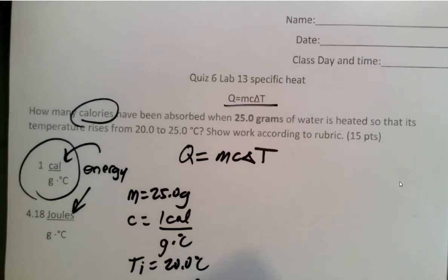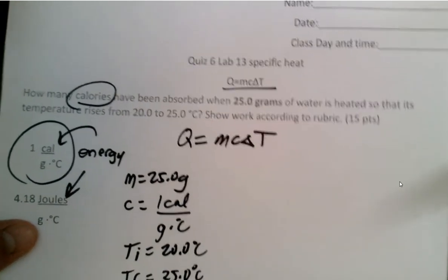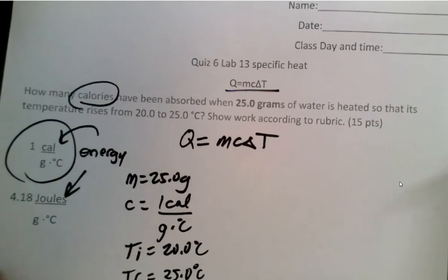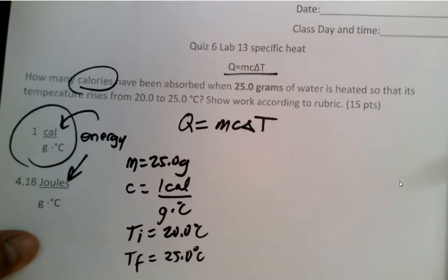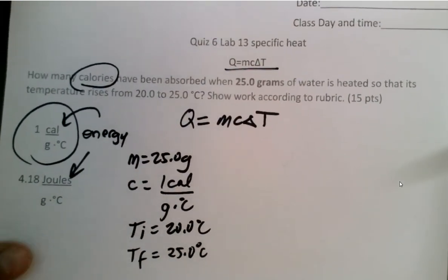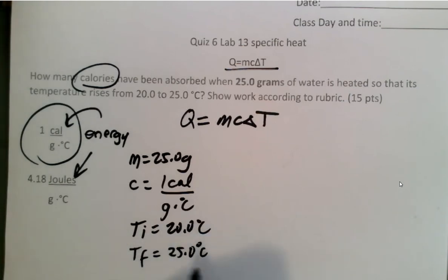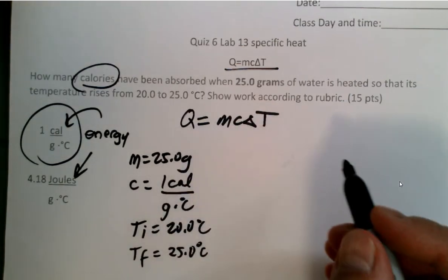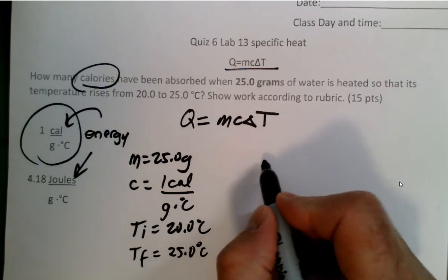So let's do that. We're kind of running out of territory, aren't we? Let's move this up just a little bit. Oh boy, I was actually off the picture, wasn't I? I was off the chart. The final temperature is 25 degrees Celsius. So let's plug into this equation and see what we come up with.